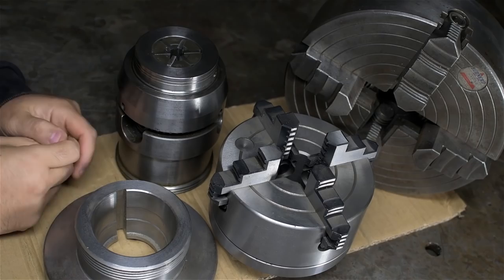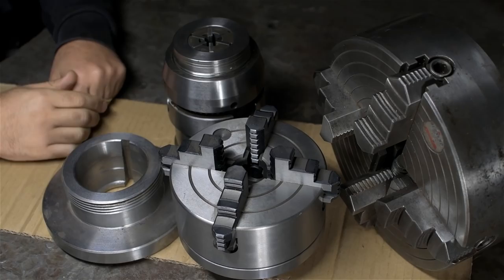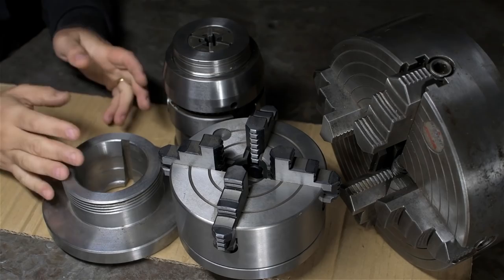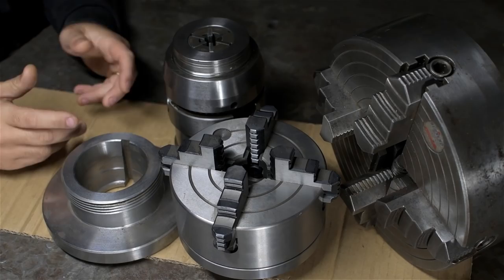These are the lathe chucks that I own. We'll talk about all of them briefly, but the concept behind this discussion extends to all workholding in general. My three-jaw chuck, which would go about here, is still installed on my lathe. It's probably the most popular and the one you're likely to have on yours. So give me a minute and I'll go grab it.